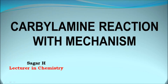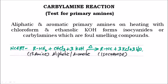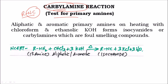In this session, I'm covering a named reaction called the carbylamine reaction with its mechanism, from the topic amines. First let us take its reaction, then we can go for the mechanism. Carbylamine is another name for isocyanides, with formula RNC, so the functional group here is NC. The name of this reaction comes from the fact that in this reaction we get formation of carbylamines or isocyanides.